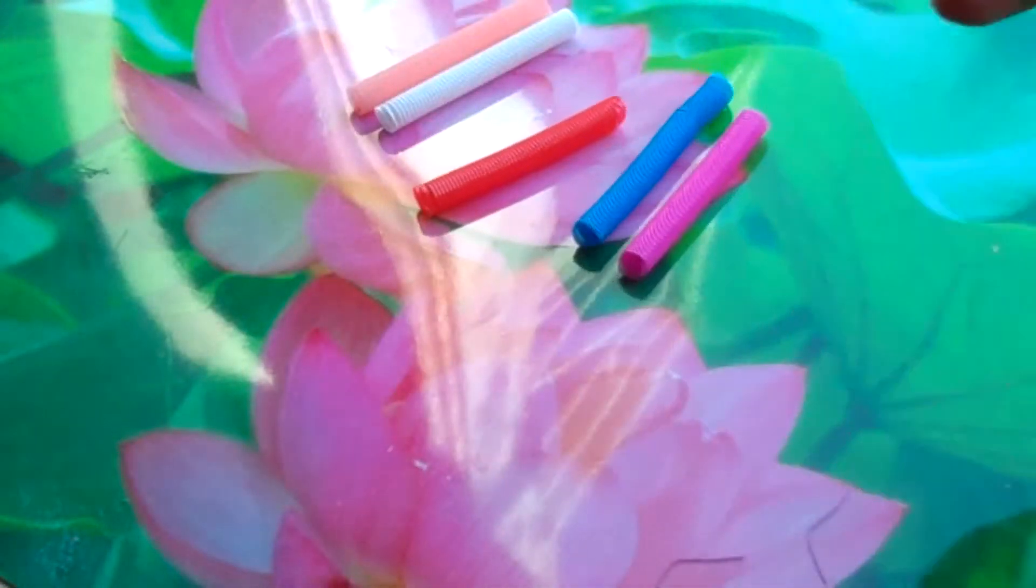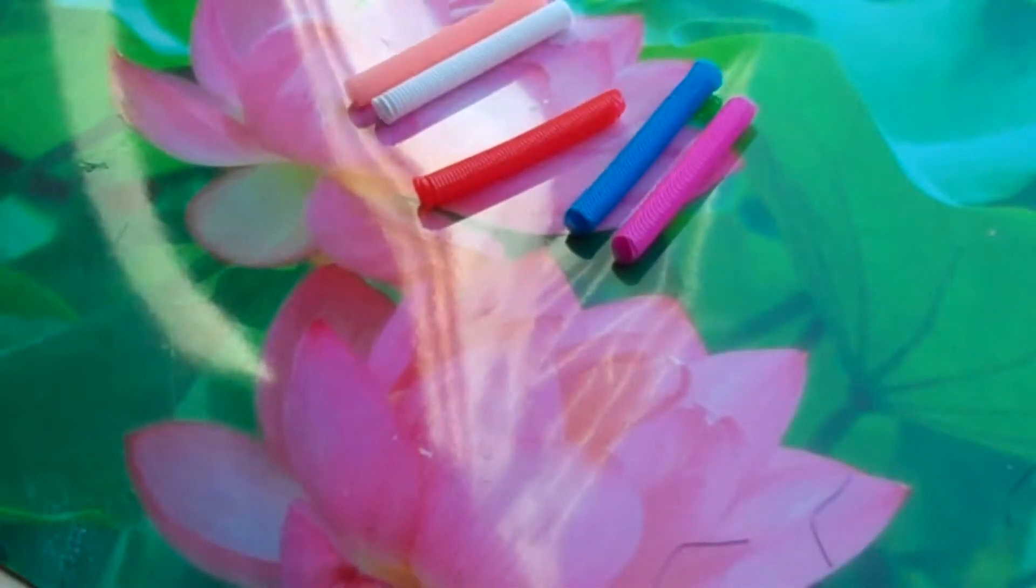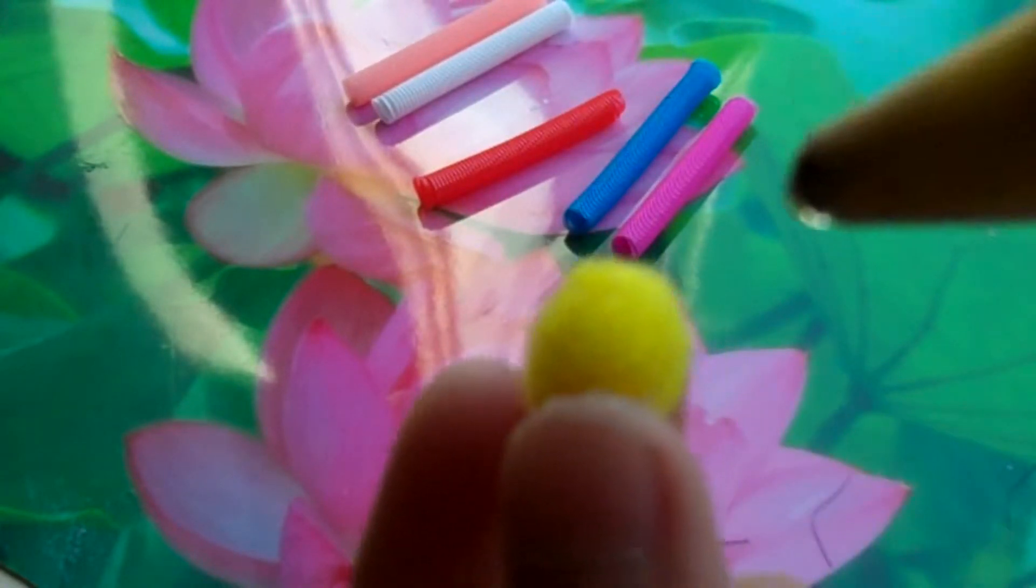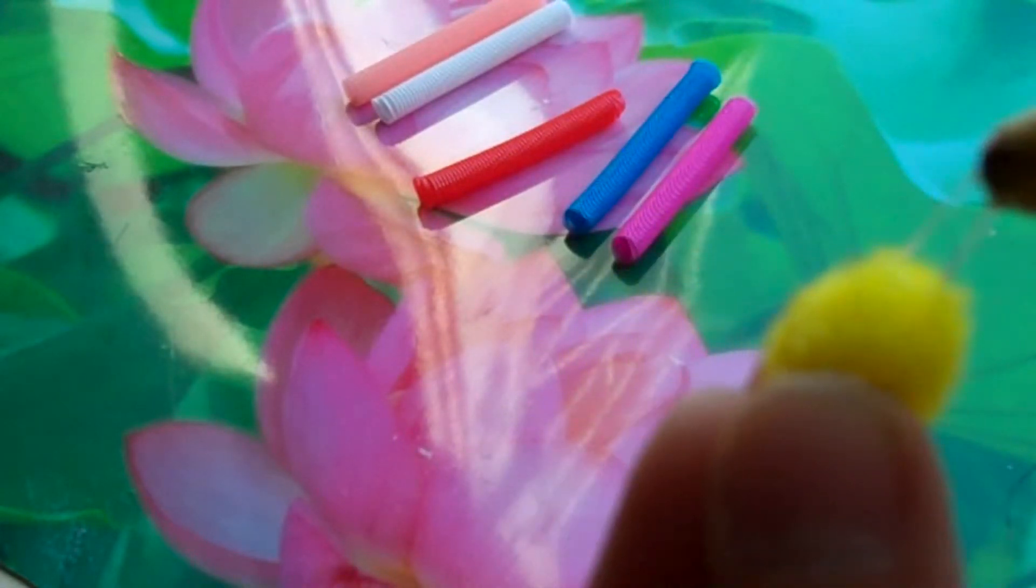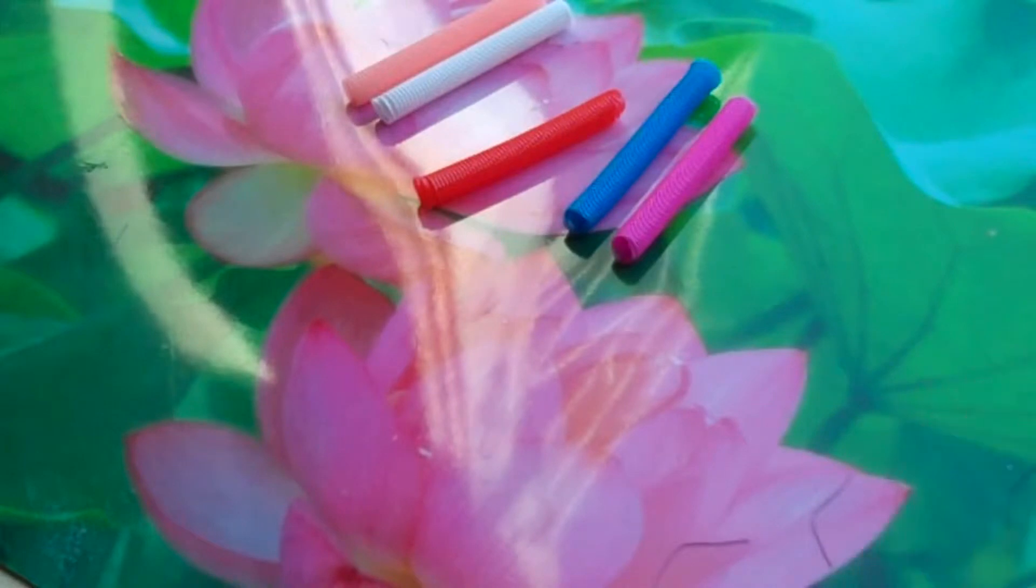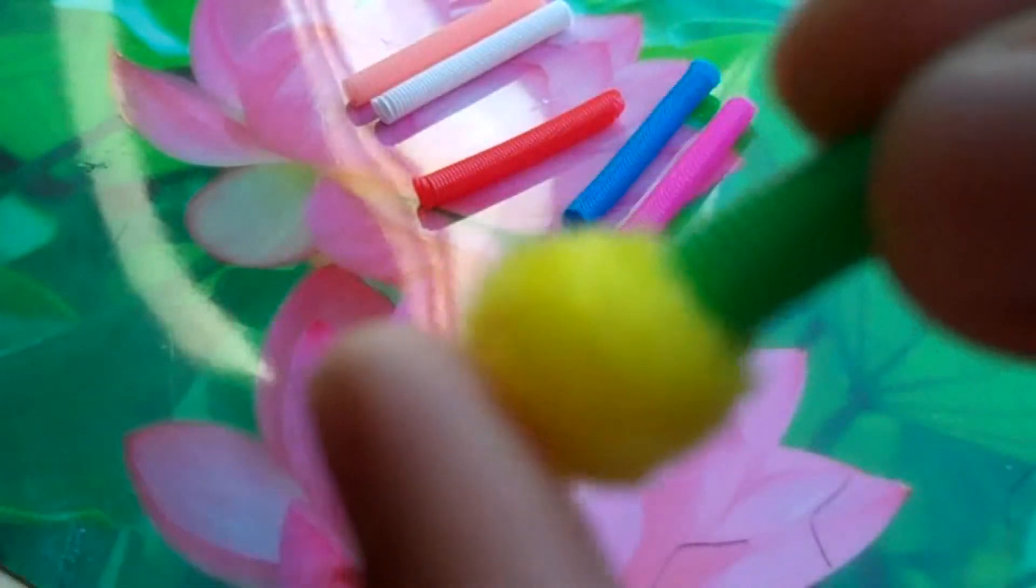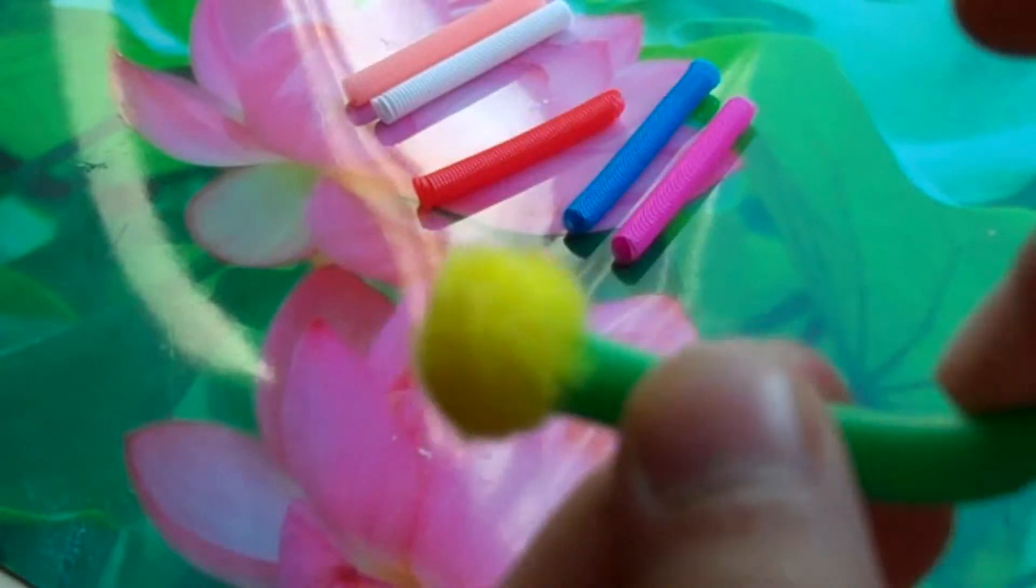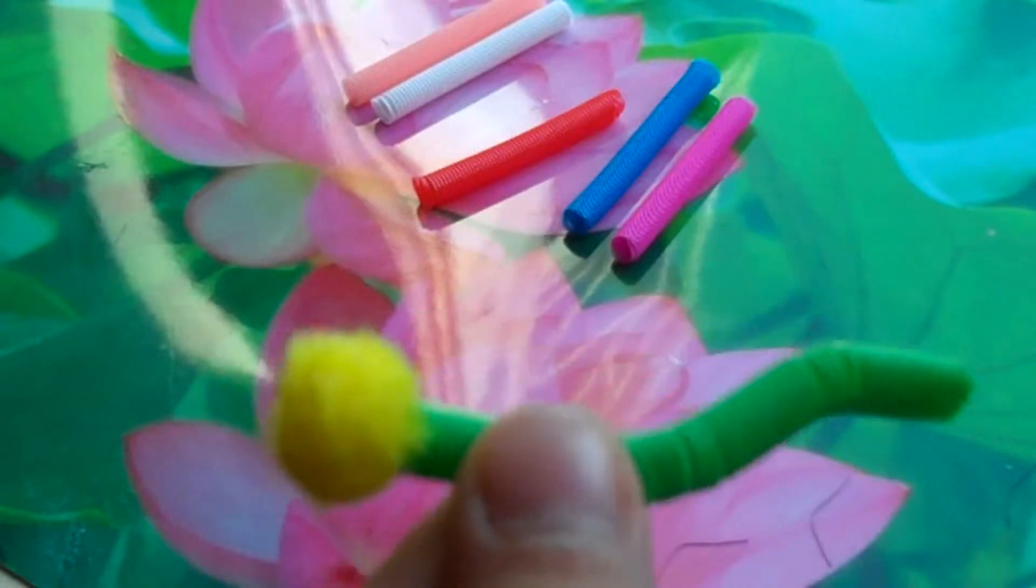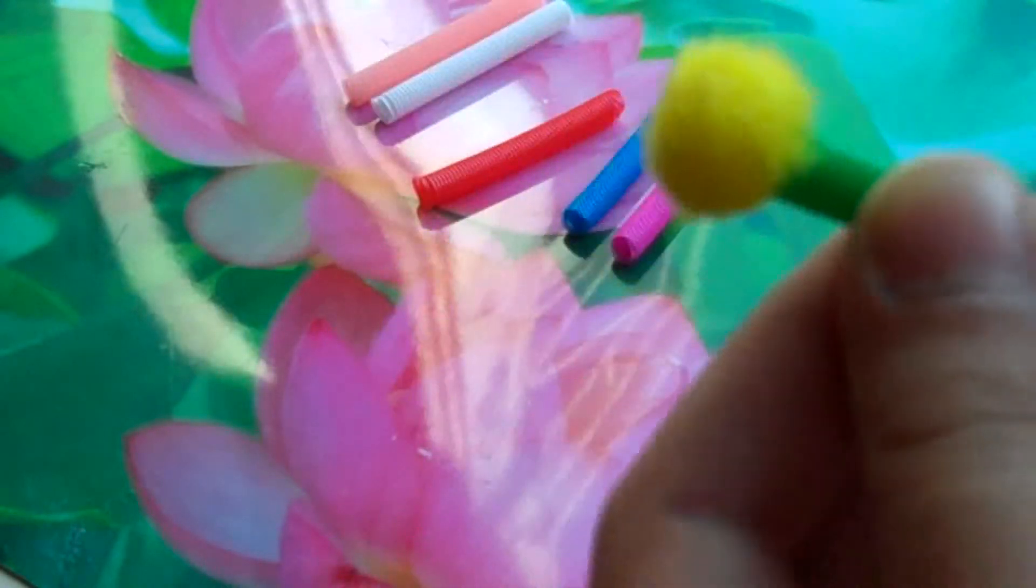Now what you want to do is put some hot glue on your pom-pom, just a little bit, and then stick it on the straw like this. This is what it will look like. You could make inchworms out of these ones because you can bend them and just add a little face with markers.